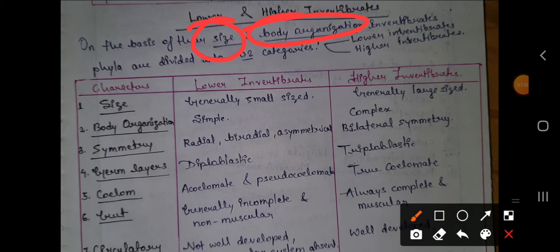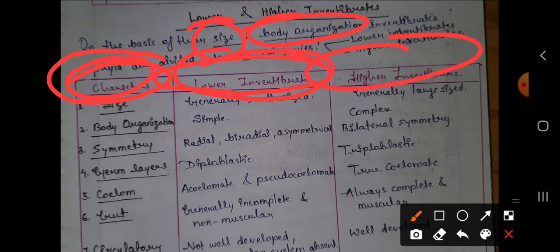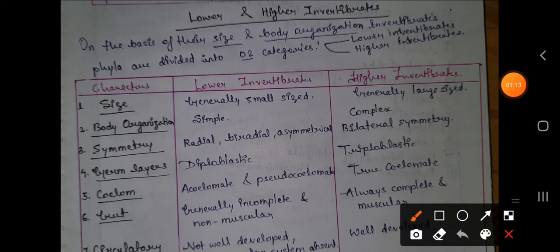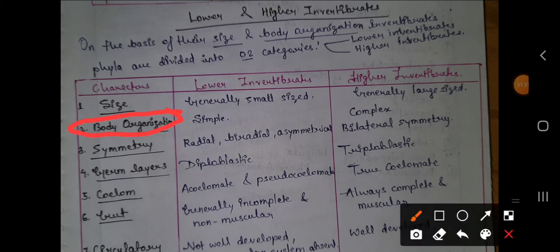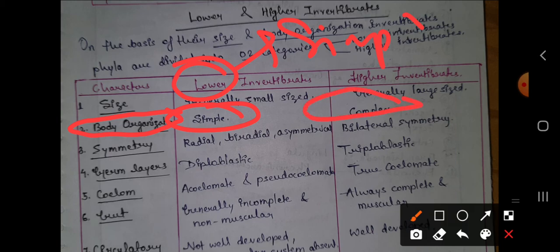Whenever you write in your exam, write in this pattern so that you fetch full marks. First write the character, then lower invertebrates, then higher invertebrates. On the basis of size, lower invertebrates are small in size while higher invertebrates are large in size. For body organization, lower invertebrates have simple body organization while higher invertebrates have complex body organization.